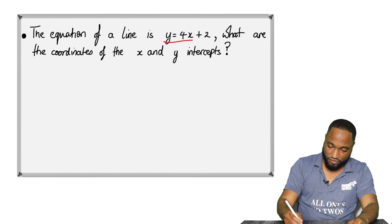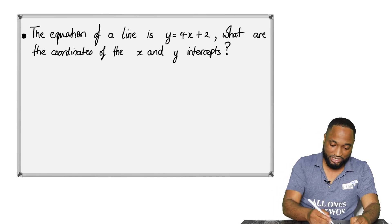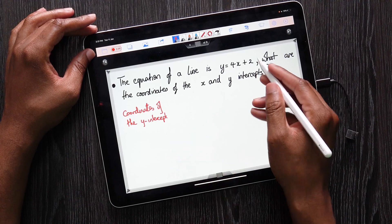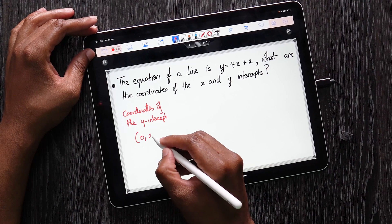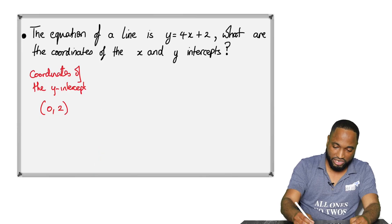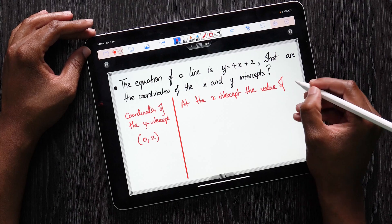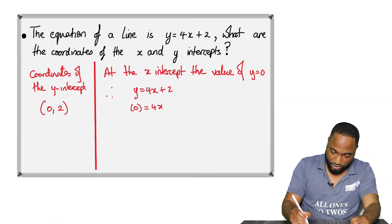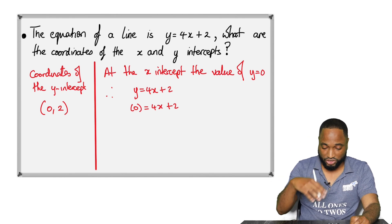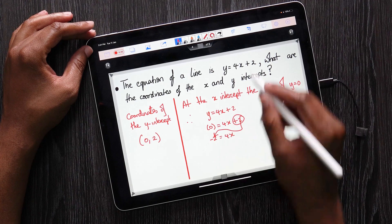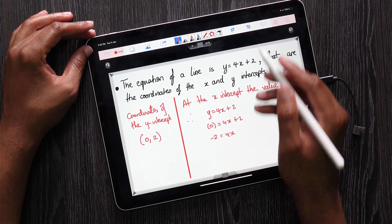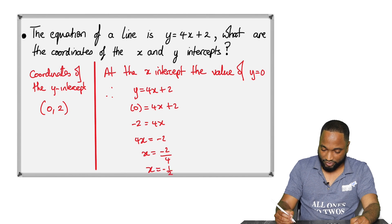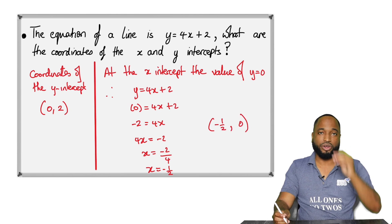Let's look at this question: the equation of a line is y equals 4x plus 2. What are the coordinates of the x and y-intercept? It's easy to find the coordinates of the y-intercept — that's (0, 2). For the x-intercept, we substitute y equals 0, so the equation becomes 0 equals 4x plus 2. Rearranging, negative 2 comes across, and you should get x equals negative a half. Therefore the coordinates of the x-intercept are (negative a half, 0).